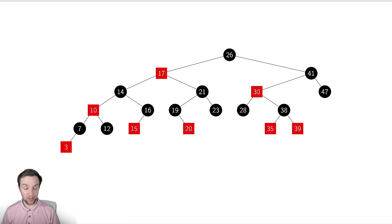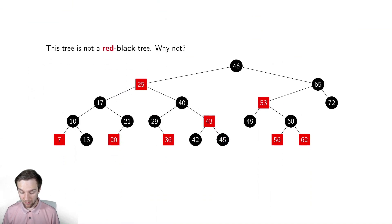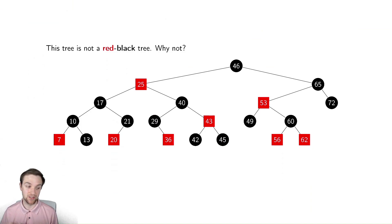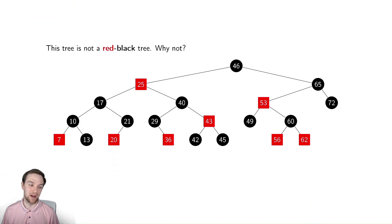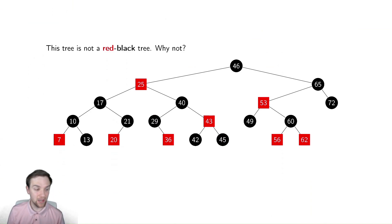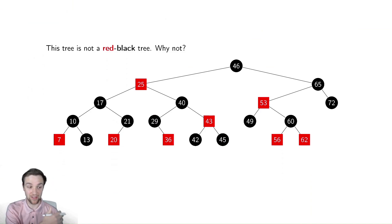Let's go down and examine another red-black tree — but it's not. This tree here is not a red-black tree. There are several ways in which it could fail. I'm going to let you pause the video and try to find out why this is not a red-black tree. The easiest thing to check is probably to find if there are any red nodes with a child that is also red. Checking all nodes — seems good, seems good, seems good — so that property is fine.